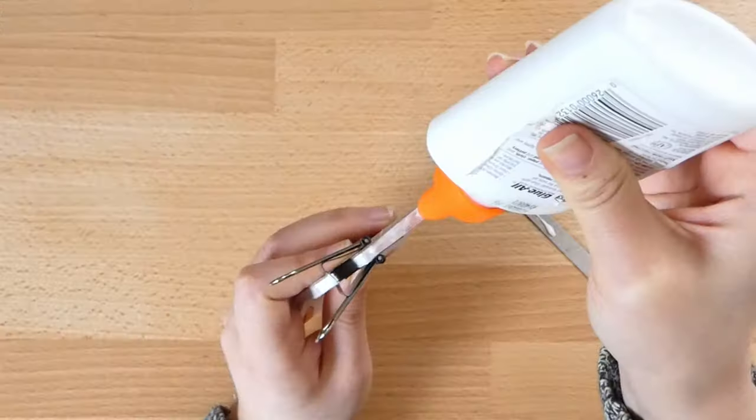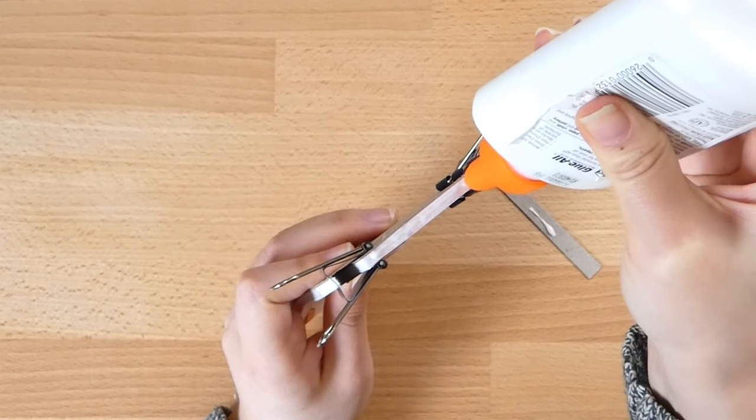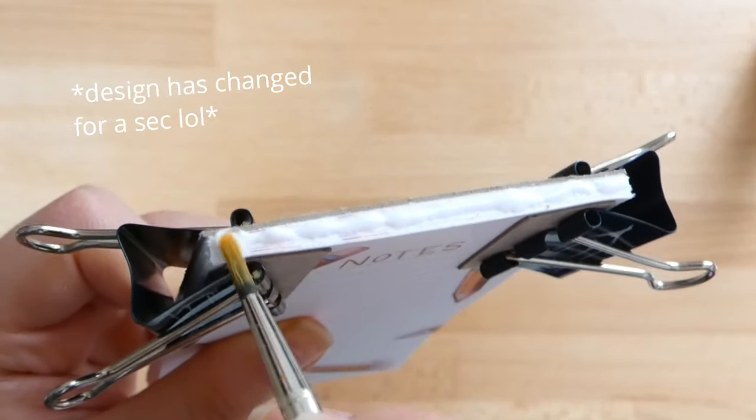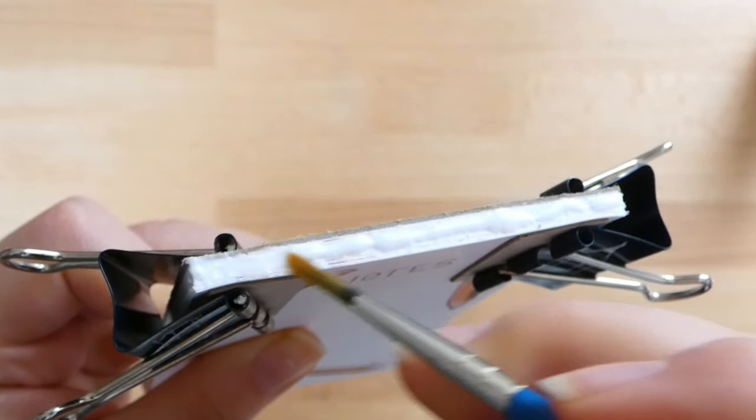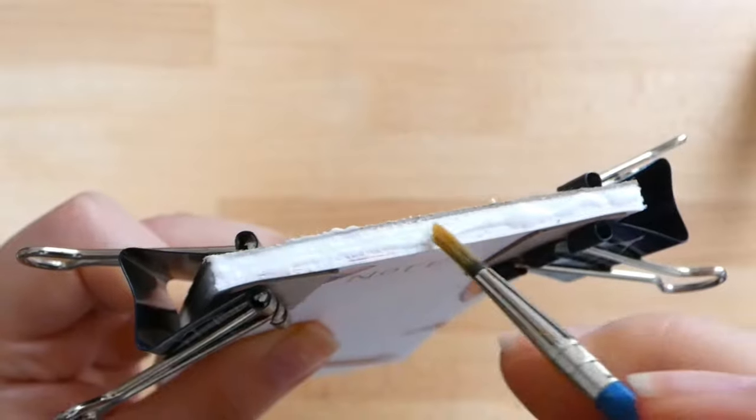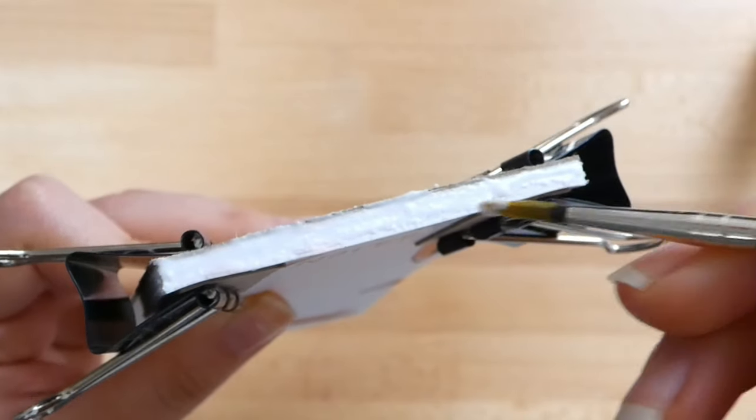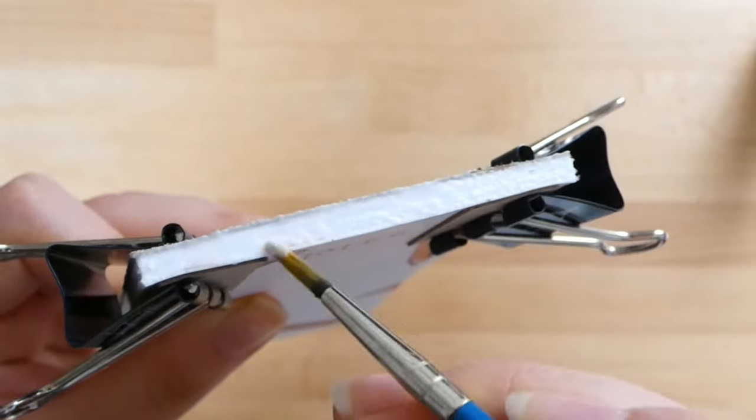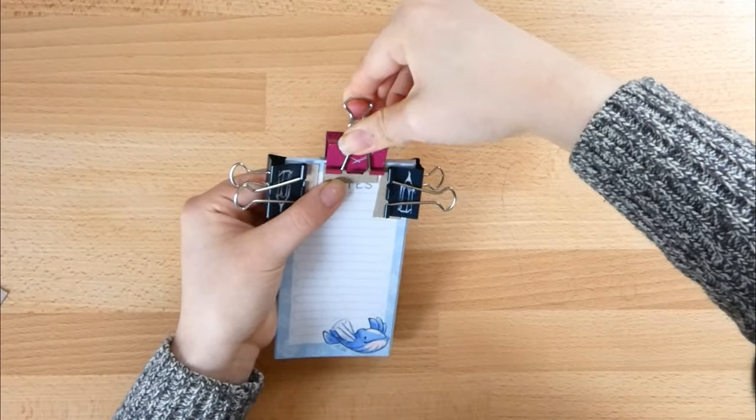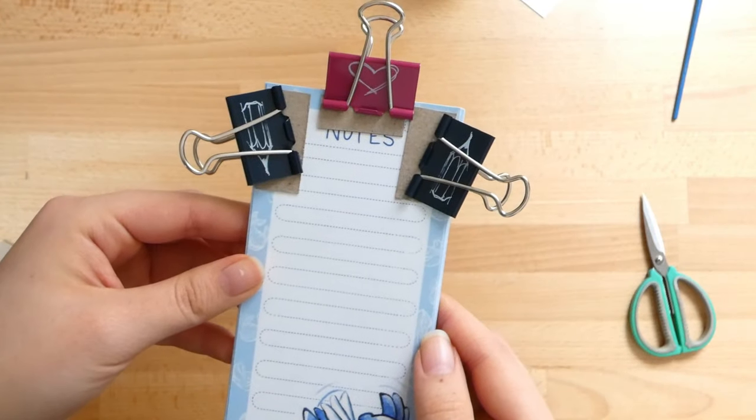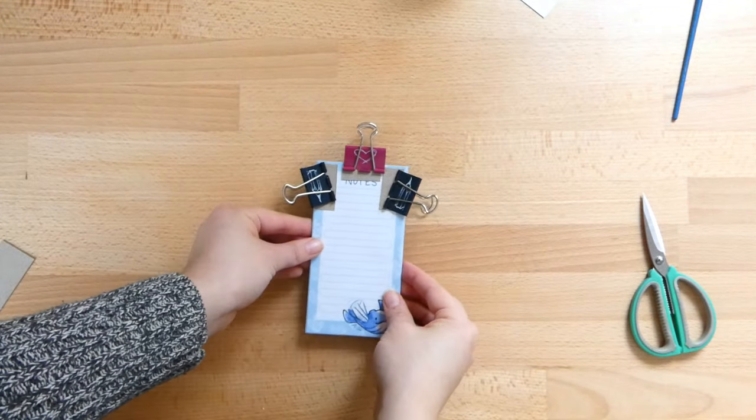And once everything is secure, take your glue and squeeze a small amount on the top of the notepad. Then take your brush and brush the glue along the top to get everything smooth and even and slick, and try your best to make sure that every single page is covered in glue. Once that's done, I like to add one more binder clip on the top of the notepad to make things more secure. And then just leave it to dry.